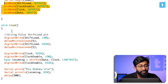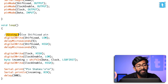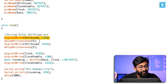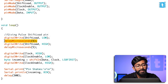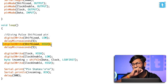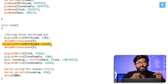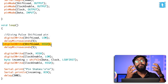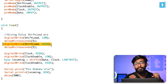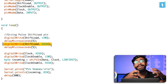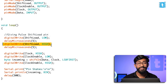Inside the loop, first we give a pulse to the shift load pin — turning it low for a very short time period with a delay, then making it high again. This short pulse is important because giving a pulse to the shift load pin takes all the inputs from the input pins and stores them inside the register of the shift register IC.